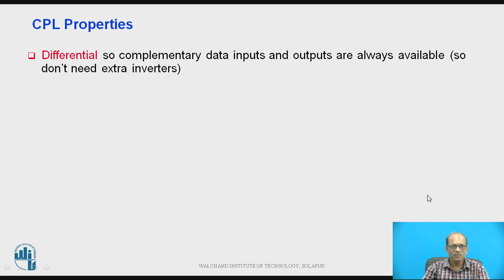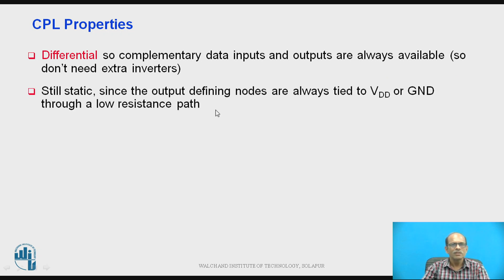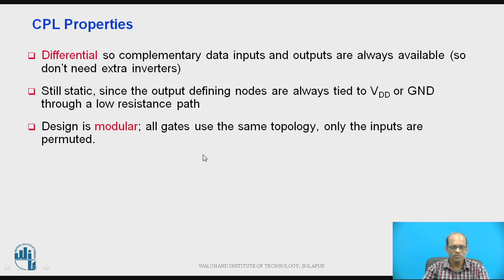So properties of CPL are first is the differential and therefore complementary data input and the output are always available and therefore there is no need of extra inverters. Still it is static since the output defining nodes are always tied to VDD or ground through a low resistance path. Then third property is design is modular means circuit diagram remains same only you have to change the inputs according to the required logic.